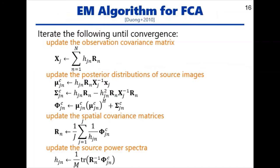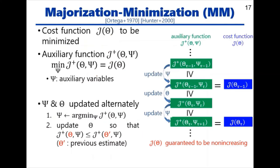This is the pseudocode of the resulting EM algorithm. In addition to the EM algorithm, another useful optimization technique applicable to FCA is a majorization minimization algorithm, or MM algorithm for short.